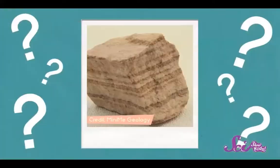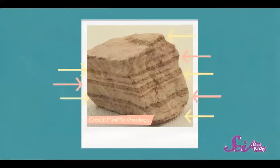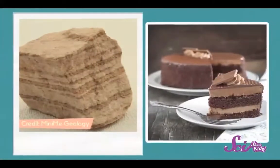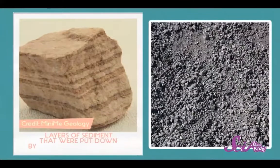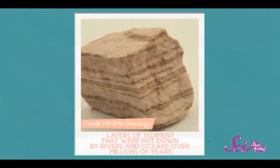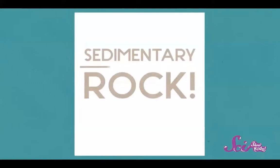What about this one, rock detectives? Check out those layers — kind of like a big cake. Those are layers of sediment put down by rivers and oceans over millions of years. Since you can see it's made up of smooshed-up layers of sediment, can you guess what it is? It must be a sedimentary rock.